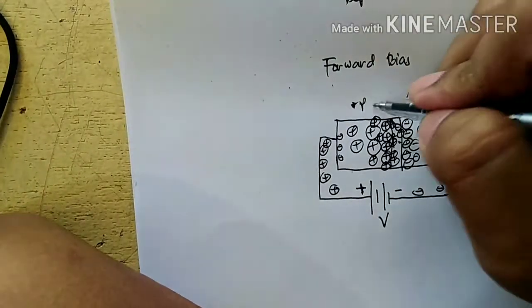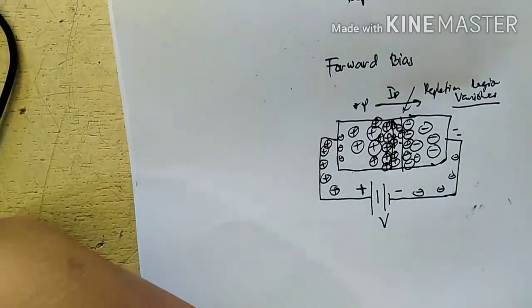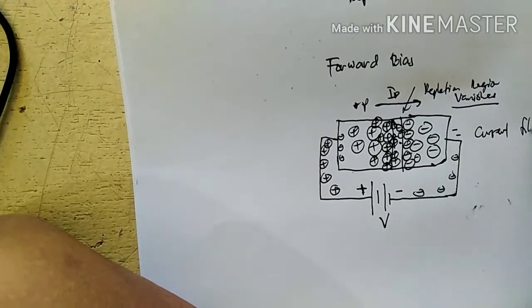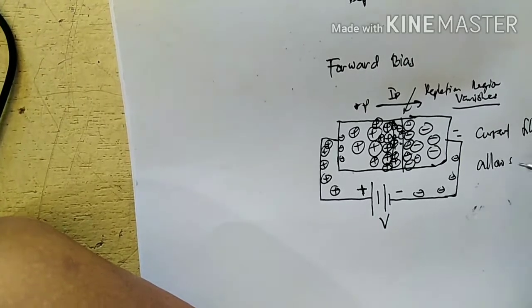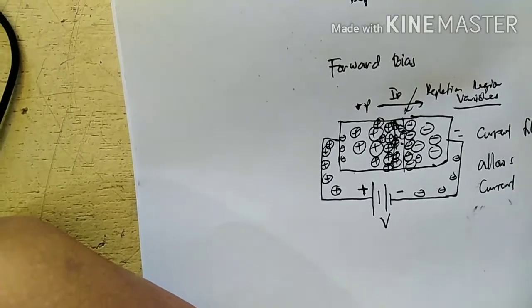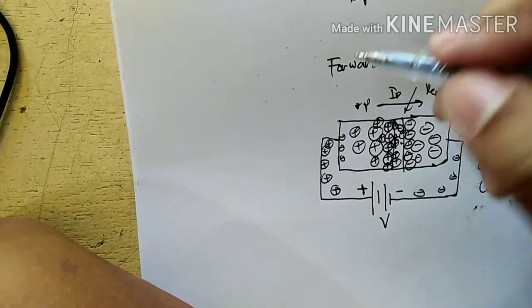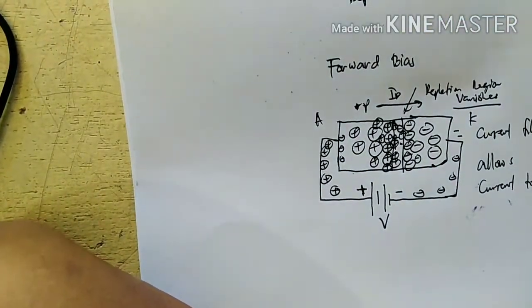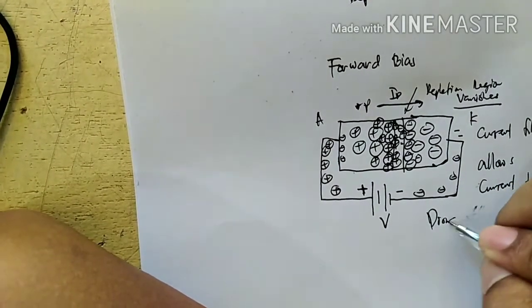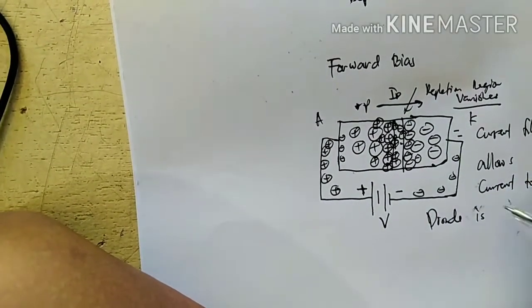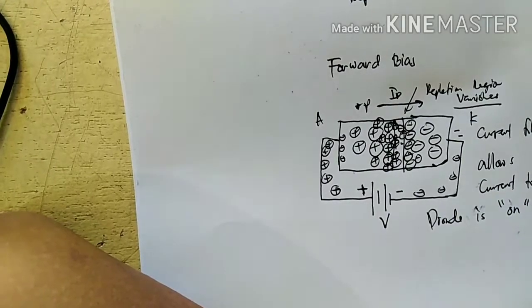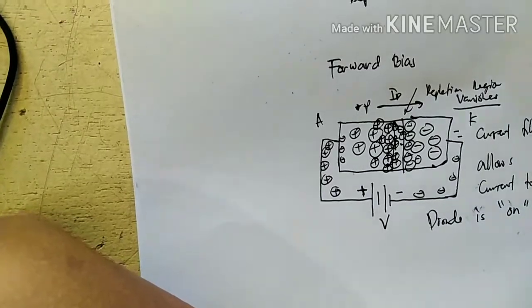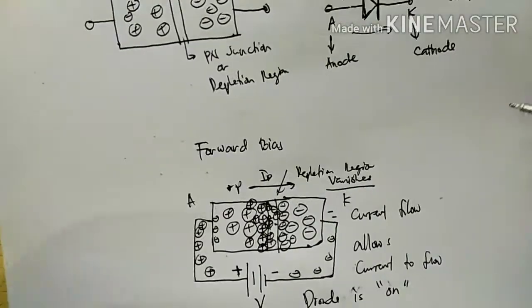Meaning allowing current ID to flow. Current flow allows current to flow from anode to cathode. So meaning in this state, the diode is on. It allows current to flow from anode to the other side.